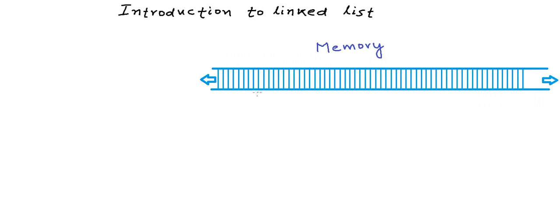This looks better. Let's say this byte here is address 200 and as we go towards the right the address increases — 201, 202, 203 and so on. It doesn't really matter whether we show memory from bottom to top or left to right. These are just logical ways to look at the memory.